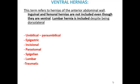Ventral hernias is a broad term referring to hernias of the anterior abdominal wall in the true sense. Inguinal and femoral hernias are not included even though they are technically ventral, and lumbar hernia is included despite being dorsolateral. Femoral hernia has been willfully omitted as it requires separate discussion, although inguinal hernia is included in this presentation. Ventral hernias to be discussed include umbilical, paraumbilical, and epigastric hernias.